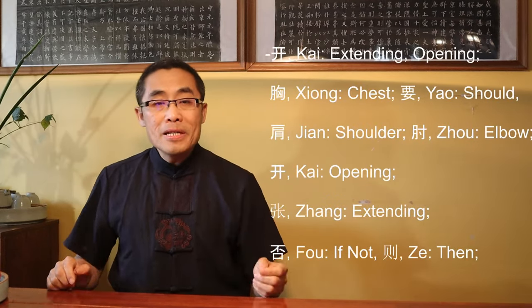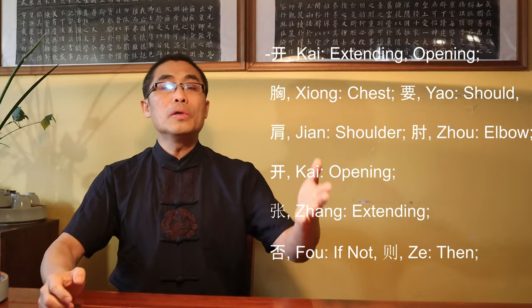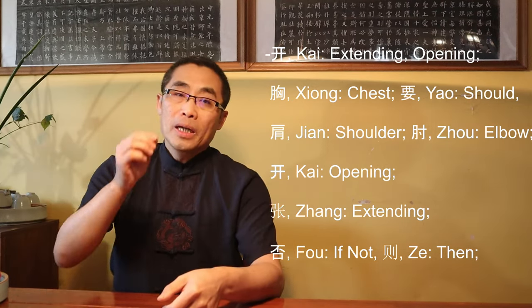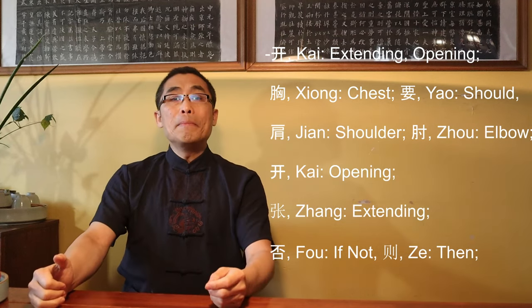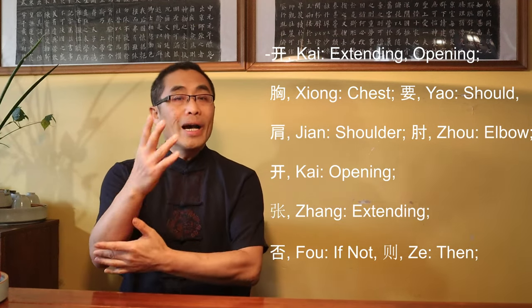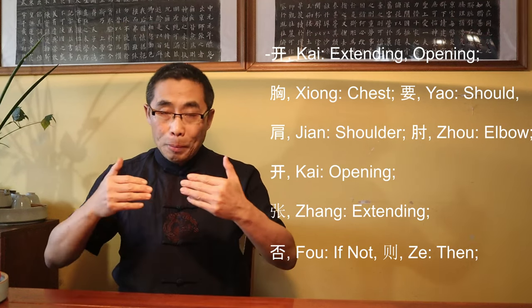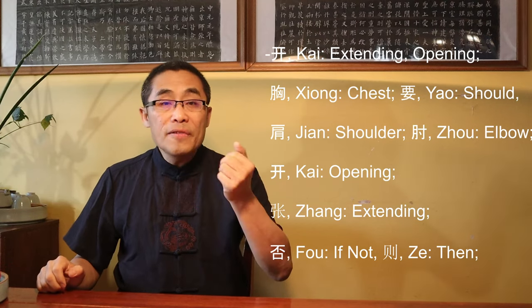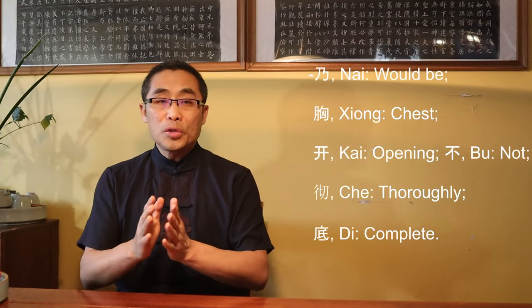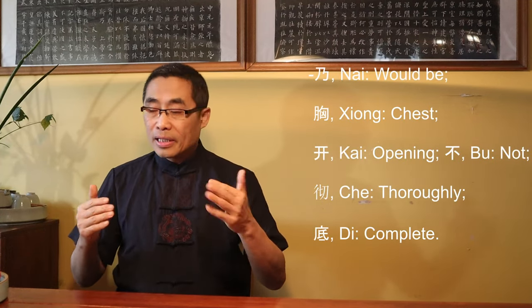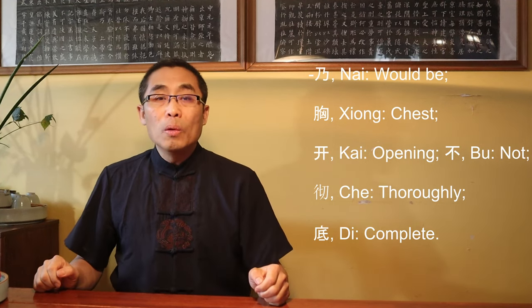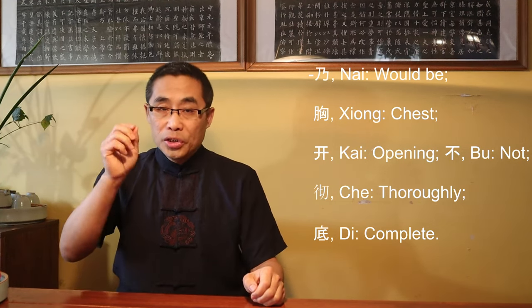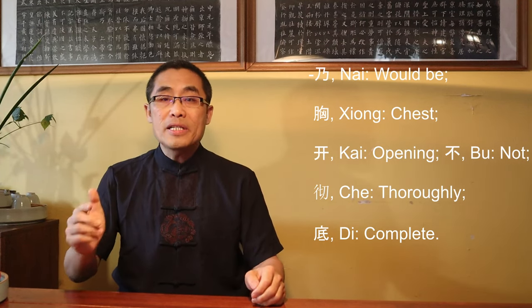Kai means extending, opening. Xiong means chest. Yao means should. Jian means shoulder. Zhou means elbow. Kai means opening. Kai means extending. Fou means if not. Ze means then. Ze means would be. Xiong means chest. Kai means open. Bu means not. Che Di means thoroughly, complete.